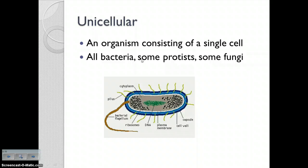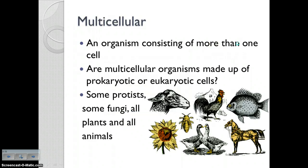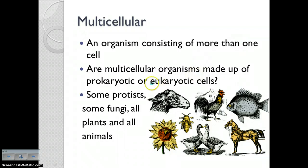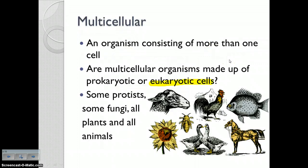We talked about the different cell types. You should know these terms: unicellular and multicellular. Unicellular, of course, being an organism made up of only one cell. All bacteria are unicellular, some protists are unicellular, and some fungi like yeast are unicellular. All other organisms are multicellular — they consist of more than one cell. Multicellular organisms — some protists, most fungi, all plants, and all animals — are made up of eukaryotic cells, because the only thing that's prokaryotic is bacteria, and all bacteria are unicellular.